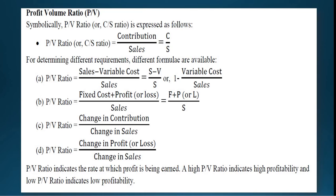What does PV Ratio indicate? PV Ratio indicates the rate at which profit is being earned. A high PV Ratio indicates high profitability, and a low PV Ratio indicates low profitability.